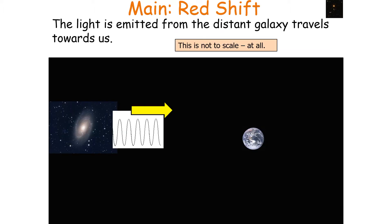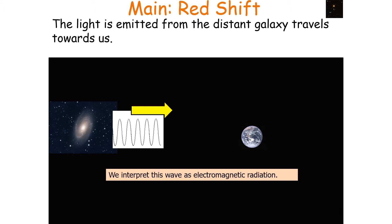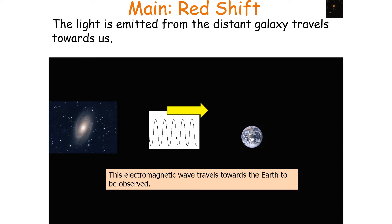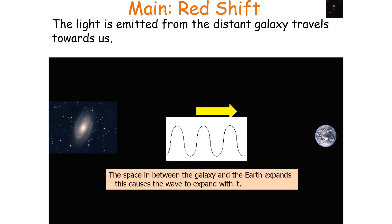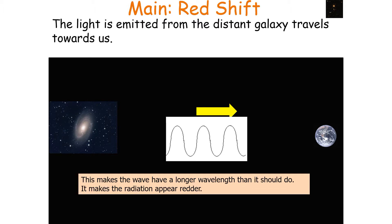Light is emitted from distant galaxies and travels towards us. We interpret this as electromagnetic radiation. Now as this electromagnetic wave travels towards the Earth, the space in between the galaxy and the Earth expands, and this causes the wave to expand with it. This makes the wave have a longer wavelength than it should, so it makes the radiation appear redder.